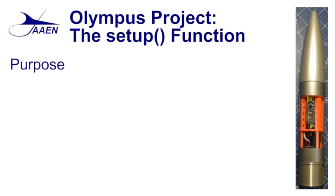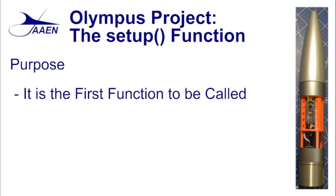The setup function is the first function to be called. Up until this point we have been declaring variables and setting up libraries. Everything up until that point has been global — these libraries, these variables, all of these can be used anywhere in the program. The setup function is actually the first function where we begin to execute some of our code operations.